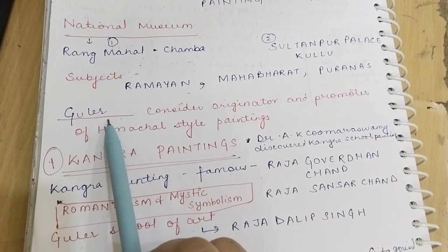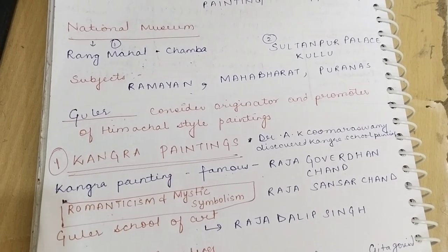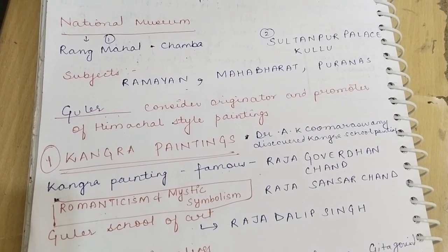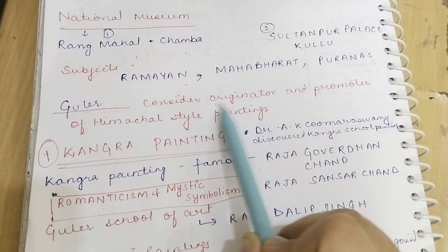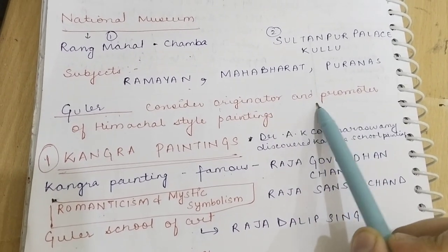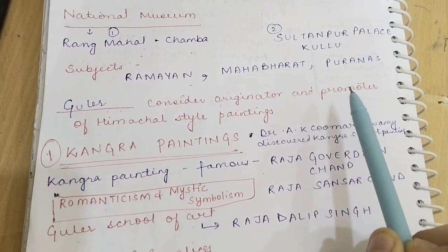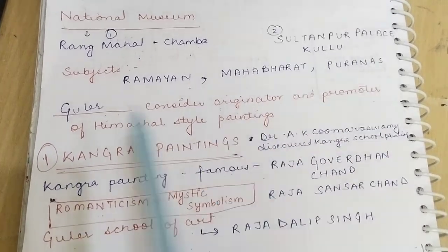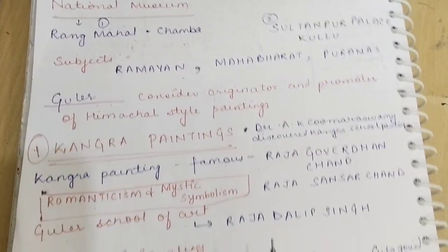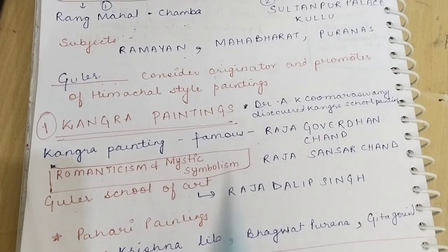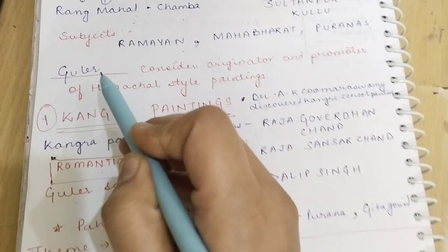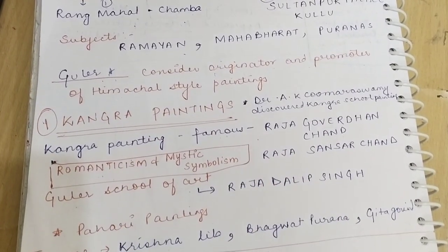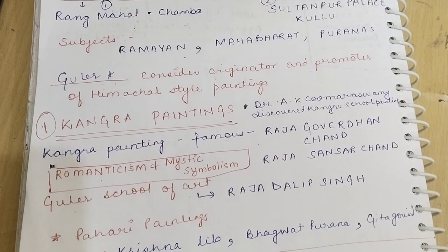Guler, which is in Kangra, is said to be the place where Himachal painting originated from. The Himachal paintings are also promoted from Guler. So Guler is the main area where the Himachal painting originated.